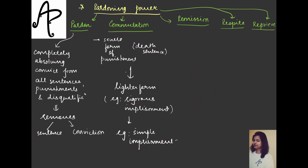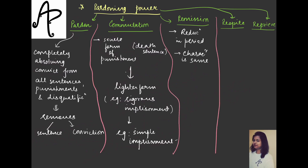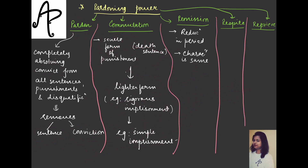Now let's talk about remission. There is a reduction in the period of the sentence, but the character of the punishment remains the same. The nature or character of punishment also changes in commutation — death sentence is a different kind, rigorous imprisonment is a different kind, simple imprisonment is a different kind. But in remission, the character remains the same; only the period is reduced.